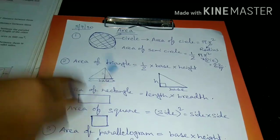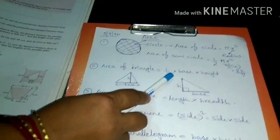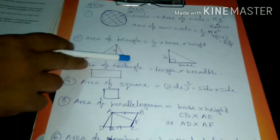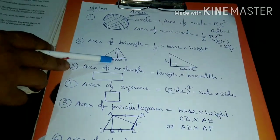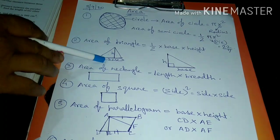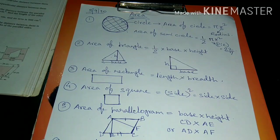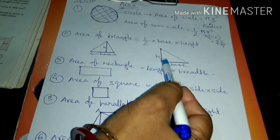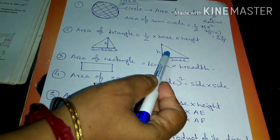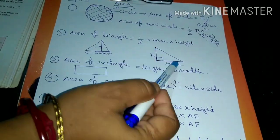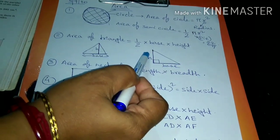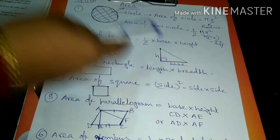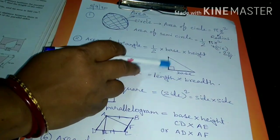Next, what is area of triangle? Area of triangle is half base into height. The base is the bottom side of the triangle, and height means the perpendicular from the base. For a right-angled triangle — where one angle is 90 degrees — the area is half into the length of the two sides making the 90-degree angle, i.e., half into base into height.